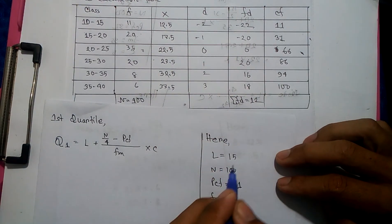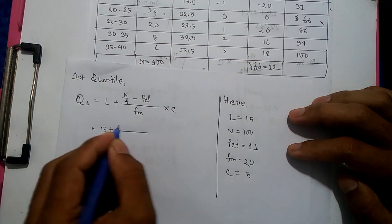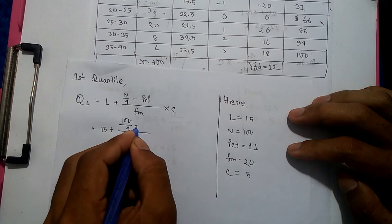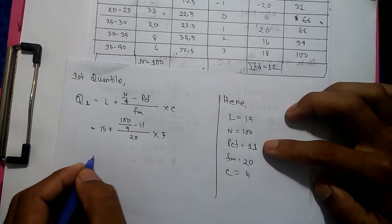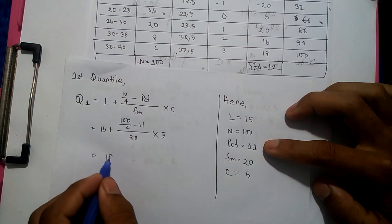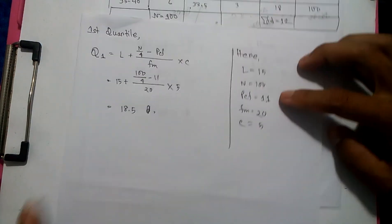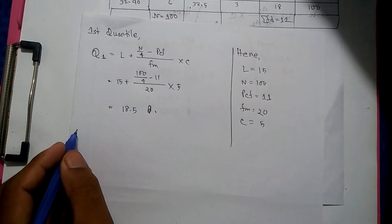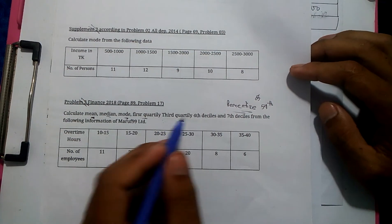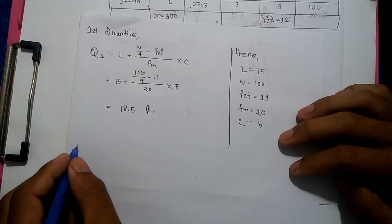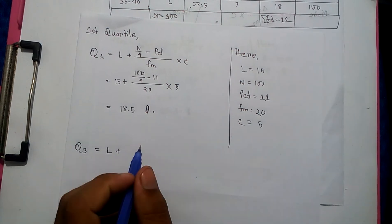Now we have the calculation: L plus n by 4 minus previous cumulative frequency, divided by FM which is 20, into c which is 5. The calculation gives us 18.5. So Q1 equals 18.5. Now moving on to the third quartile Q3.